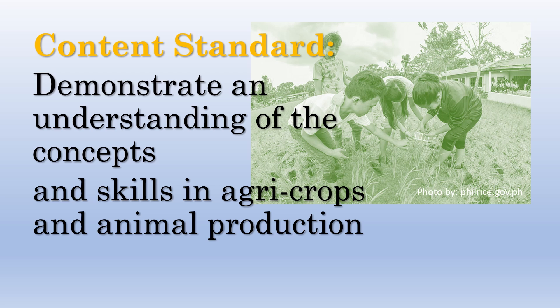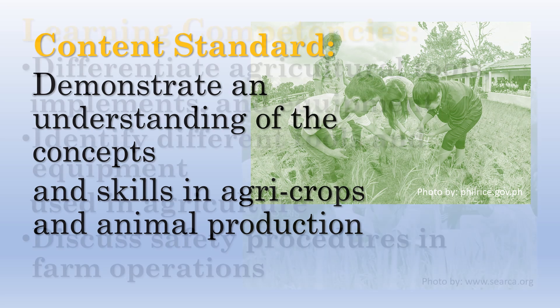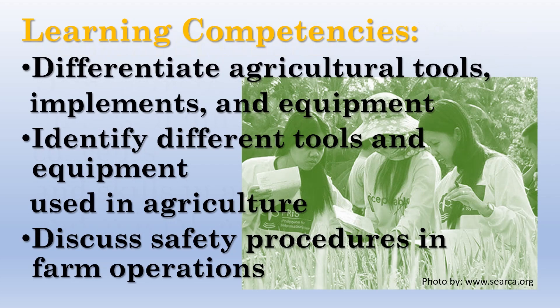Content Standard: Demonstrate an understanding of the concepts and skills in Agri-Crops and Animal Production. Learning Competencies: Differentiate agricultural tools, implements, and equipment; identify different tools and equipment used in agriculture; discuss safety procedures in farm operations.